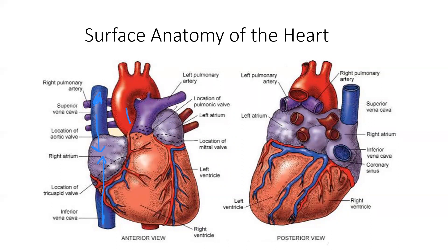Here is the right ventricle. I also want to show you that we have the left pulmonary artery. The blood from the right ventricle drains into the pulmonary artery. This is one place where you're going to see where an artery carries deoxygenated blood. The left pulmonary artery and the right pulmonary artery contain deoxygenated blood.